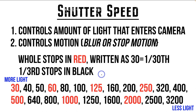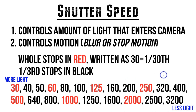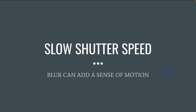In this slide I have added the numbers in between in third of stops. So 30, 60, 125, and 250 are going to be your whole stop numbers, and the numbers in between are going to be your third-of-stop numbers. If you see those on your camera, that's what they stand for. Once again, the lower the number, the more light that comes in; the higher the number, the less light comes in.